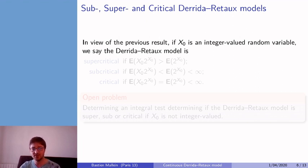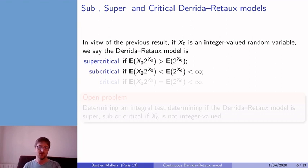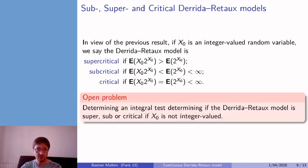So we see that if X₀ is integer valued, then the Derrida-Retaux model is supercritical if the expectation of X₀·2^(X₀) is larger than the expectation of 2^(X₀), it is subcritical if the inequality is in the other way, and it will be critical when the two quantities are equal. Note that the question of determining an integral test similar to this one, if the random variable X₀ is not integer valued, is still an open problem.